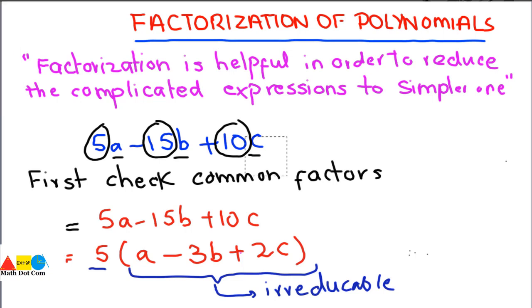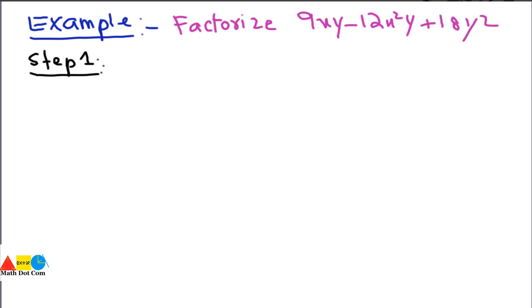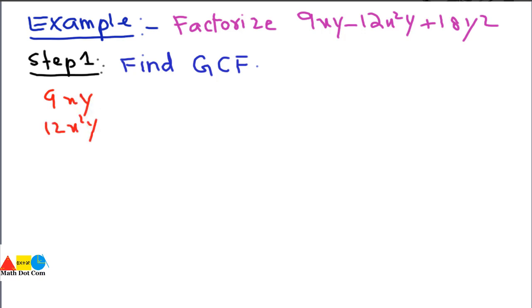Let's discuss the method of taking common factors step by step using an example. Factorize: 9xy minus 12x squared y plus 18y squared. Step one is to find the GCF — the Greatest Common Factor. To do this, write all the terms: 9xy, 12x squared y, and 18y squared.